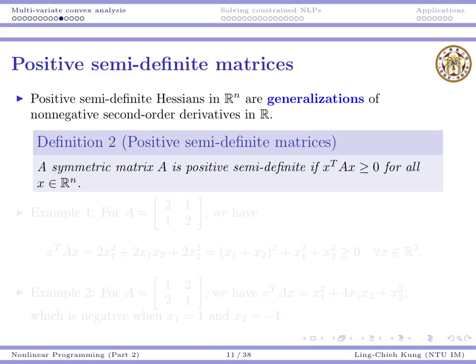A Hessian matrix is positive semi-definite if the following holds. If a matrix is symmetric, we say it is positive semi-definite if for all x, we have the non-negativity condition: x-transpose times A times x is non-negative.